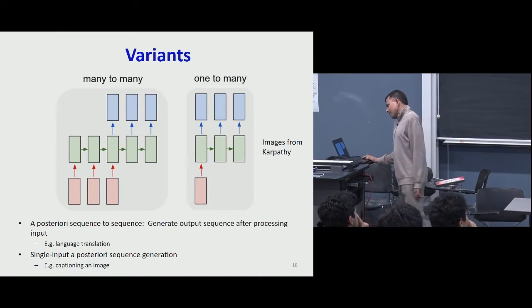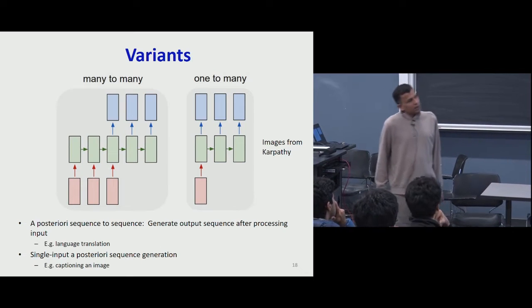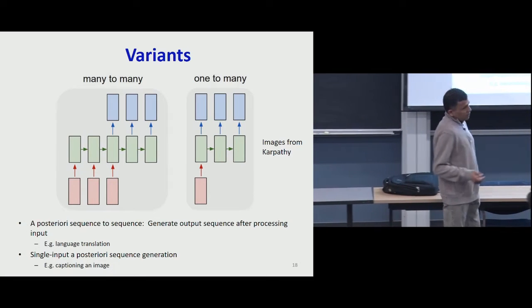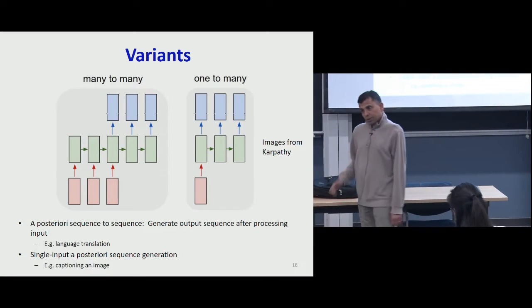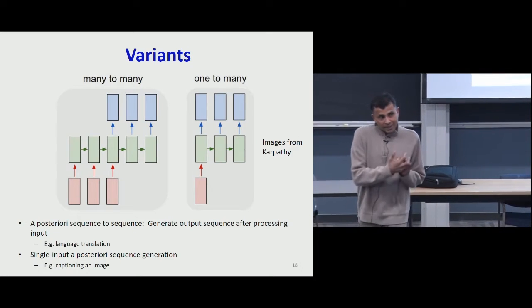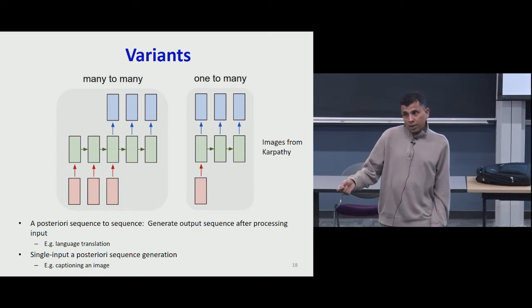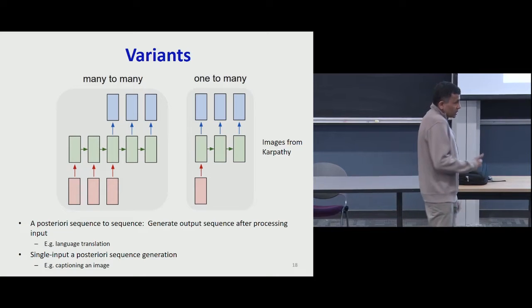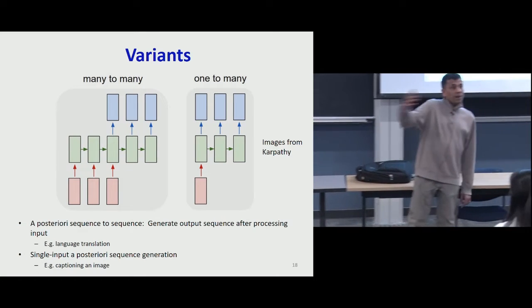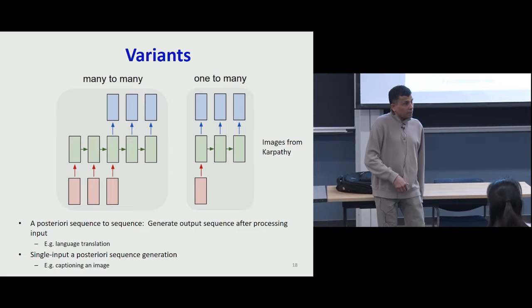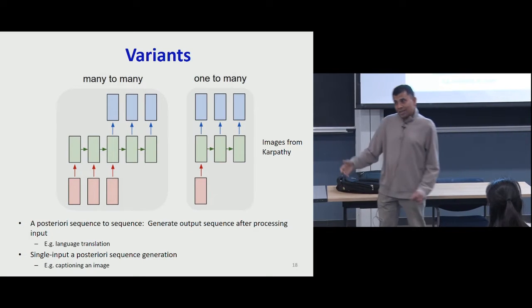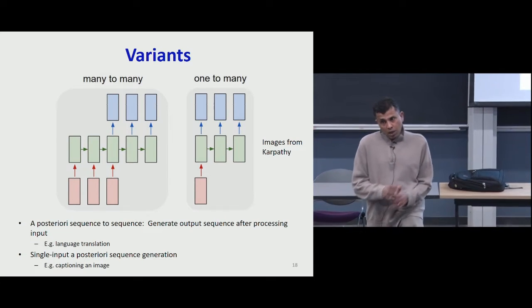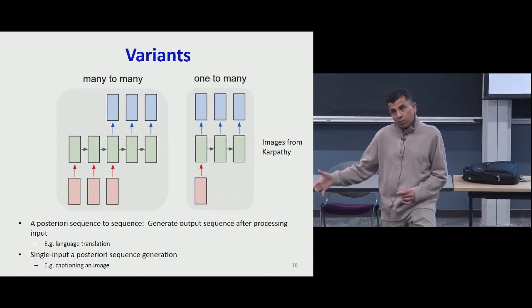You can also have something where the network analyzes an entire series of inputs and then produces an entire series of outputs. This would happen if you were translating text — from English to French, for instance — you have to see the entire sentence before deciding what the output must be. You cannot begin doing it even before the sentence is complete because grammar rules in these languages are different. The verb might happen at the very end in one language and at the beginning in the other. So you'd have to wait to see the entire input before producing the entire output.